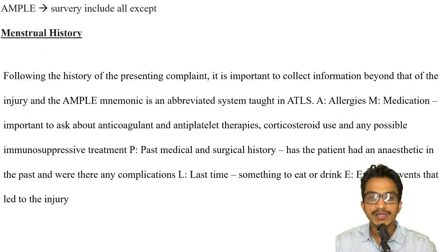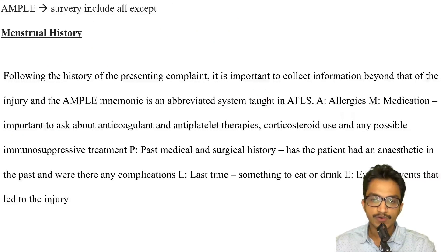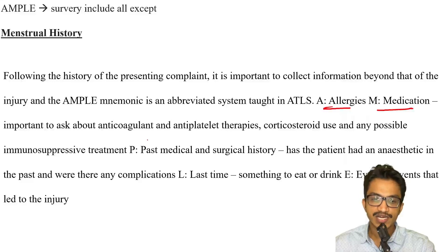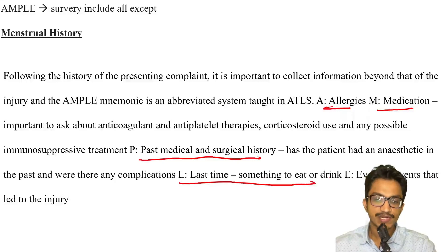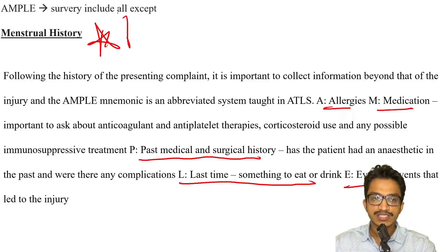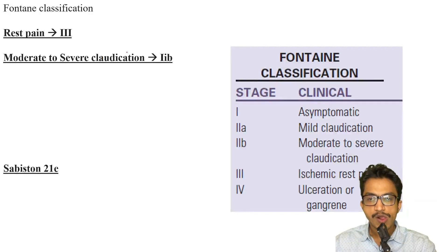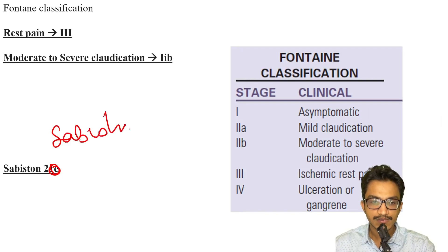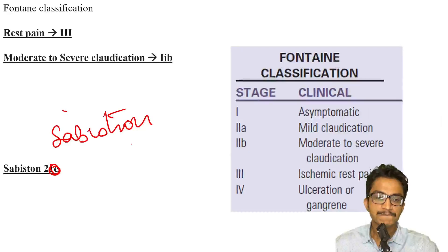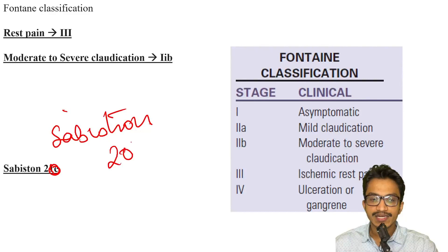For the AMPLE survey, 'M' stands for menstrual history — which is not a component. AMPLE stands for: Allergies, Medications, Past medical or surgical history, Last time the patient had something to eat or drink, and Events. That should be the answer.